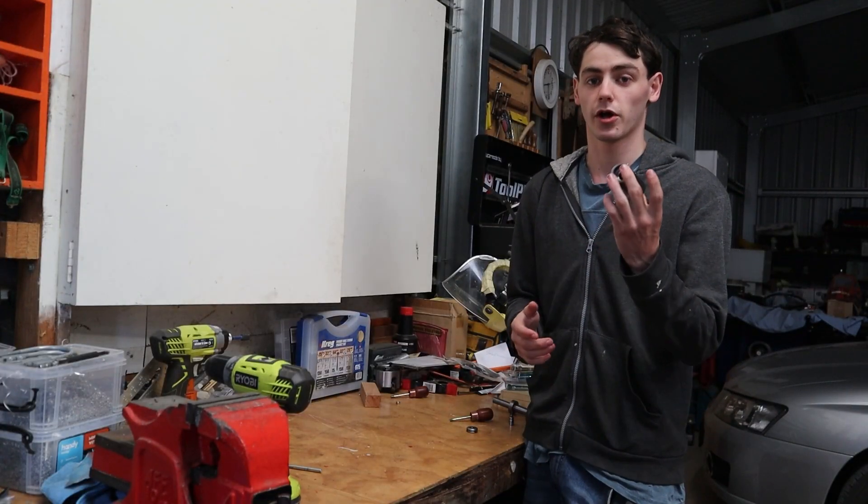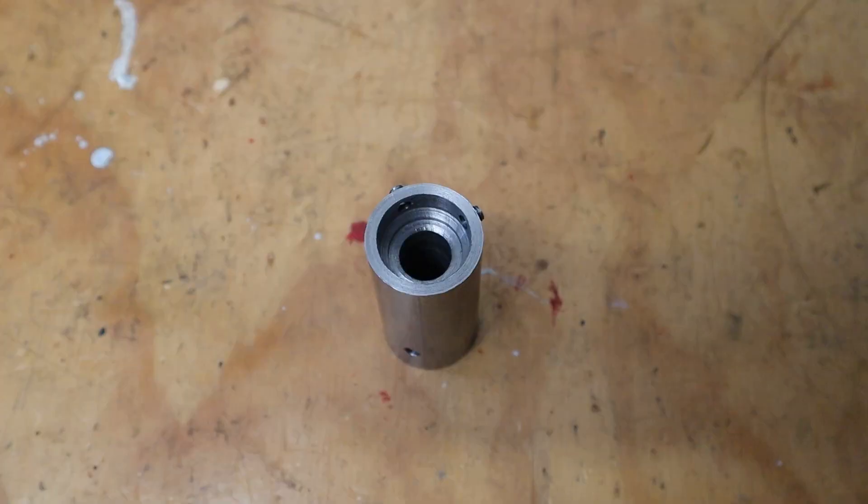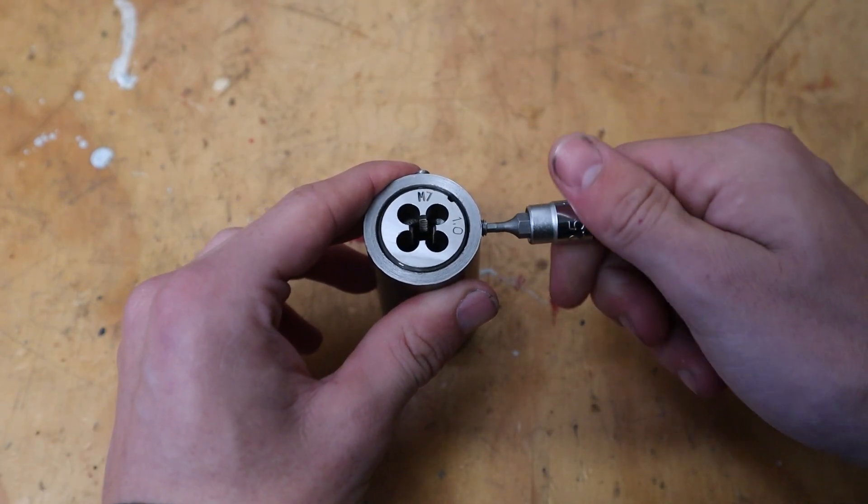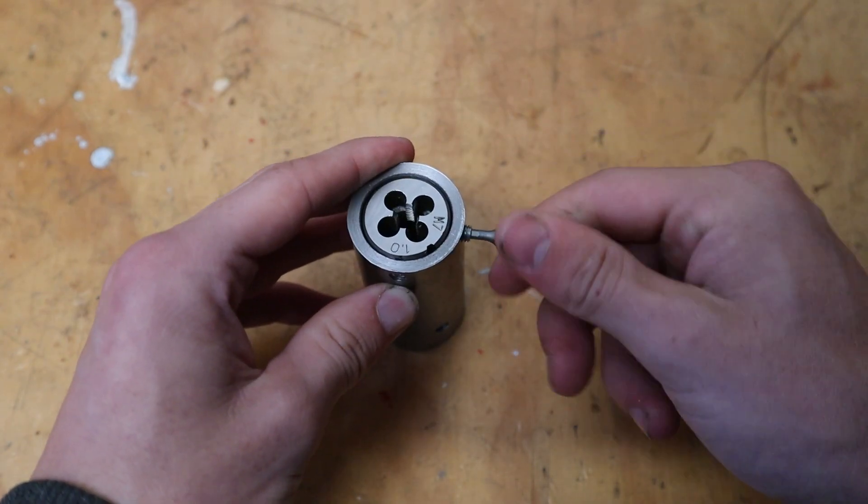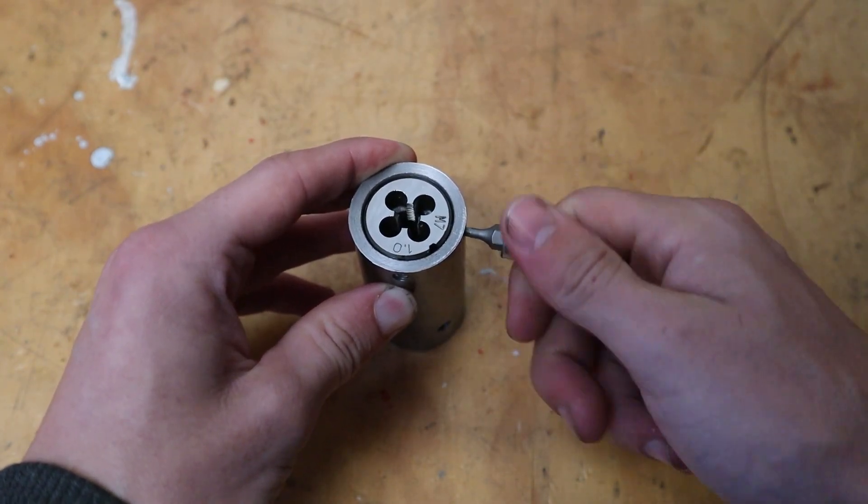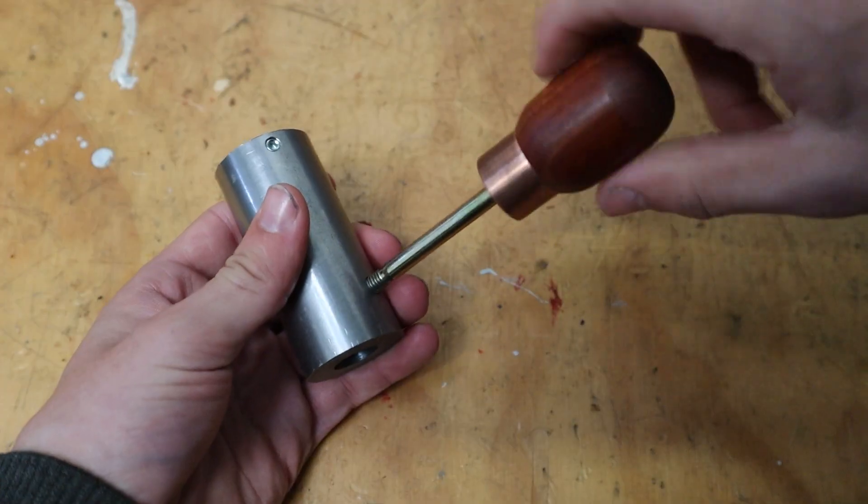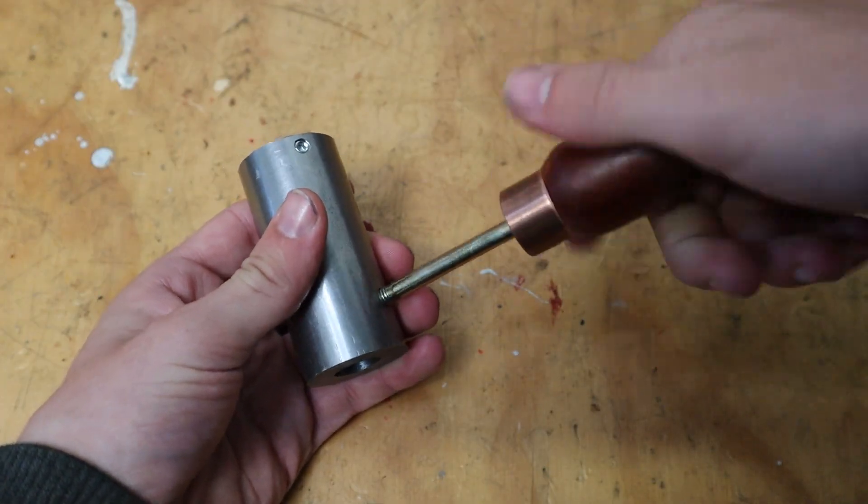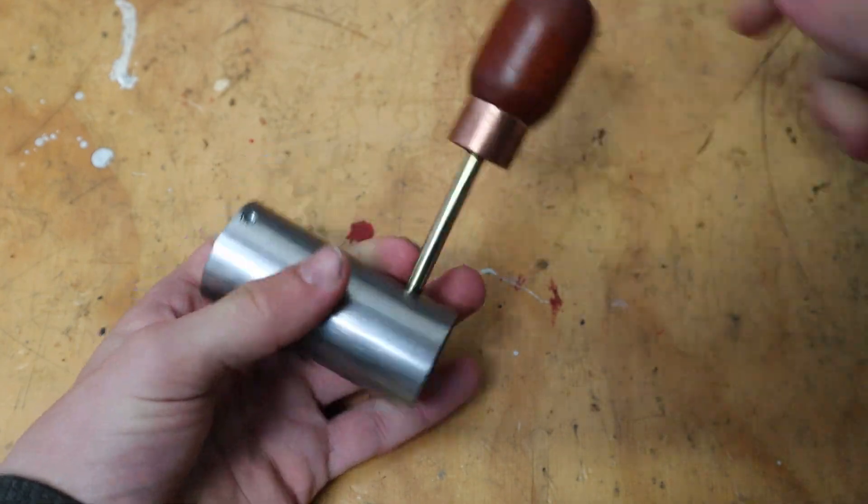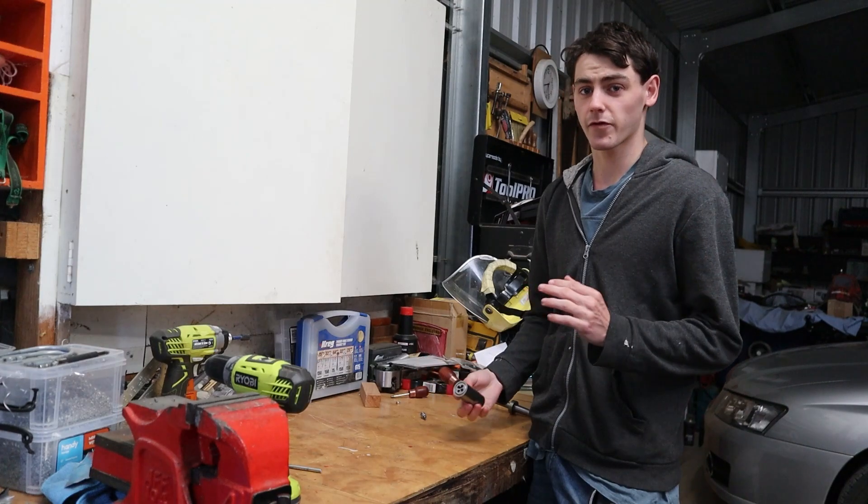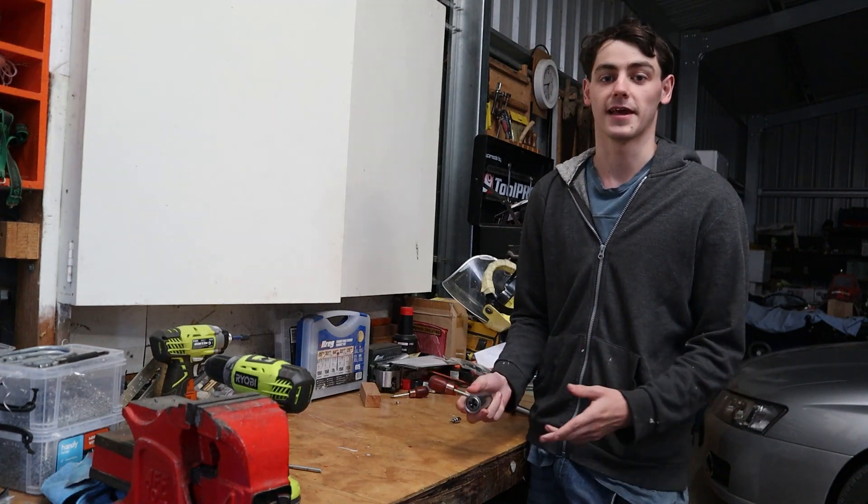So the basic design of the actual die holder is done. You simply just drop a tap here and tighten it down with the grub screws. Then you can grab the handle and simply just screw that on to the back here. And while that does look very good, there's no real way to hold it into the actual lathe.